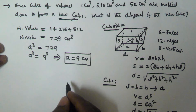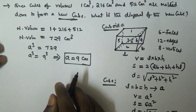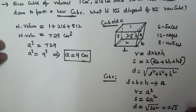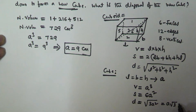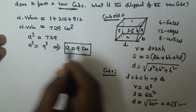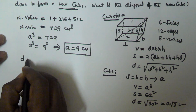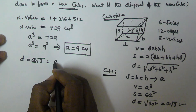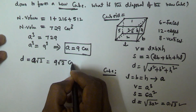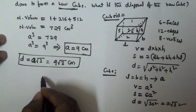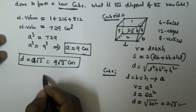The side of the new cube is 9 cm. We know that the diagonal of a cube is given by A√3. So the diagonal of the new cube is D = 9√3 cm. That is the diagonal of the new cube.